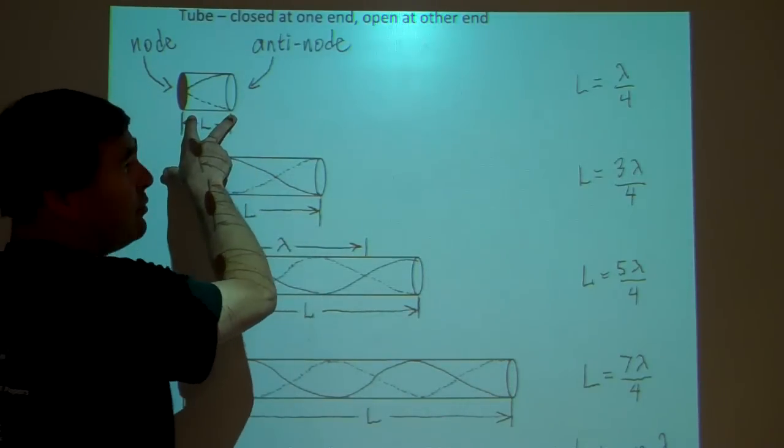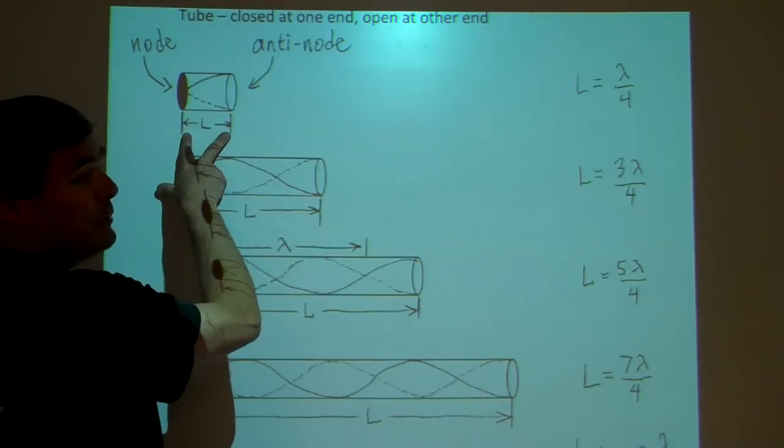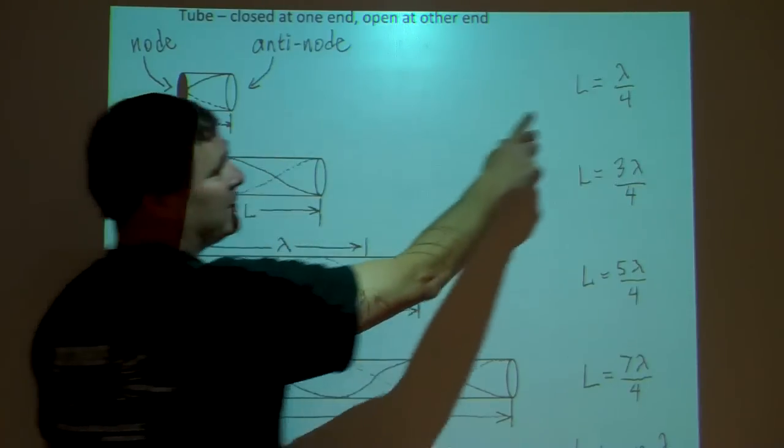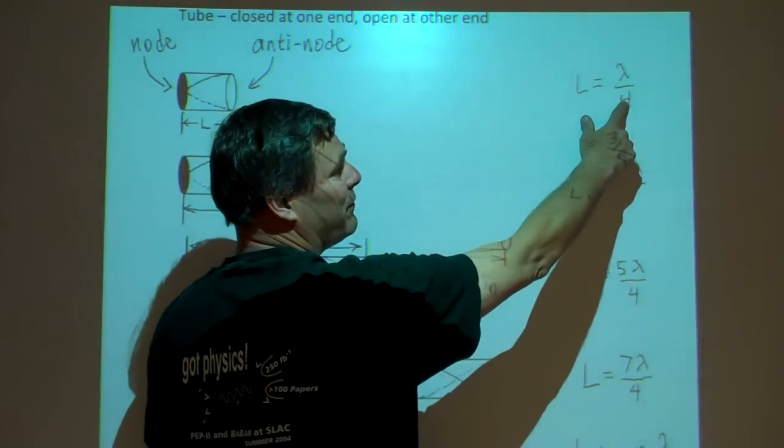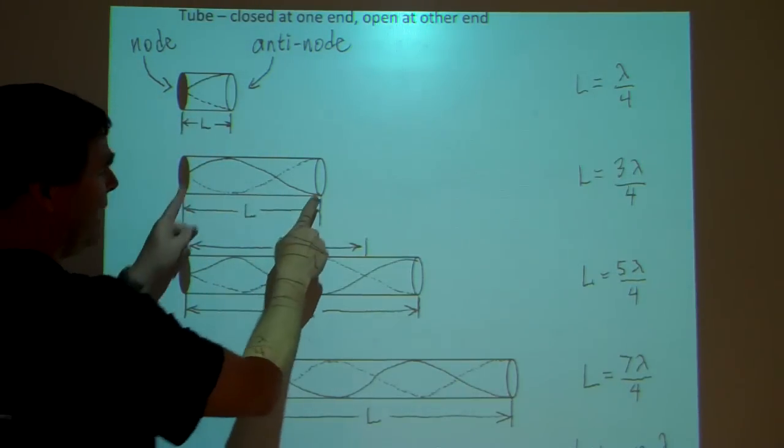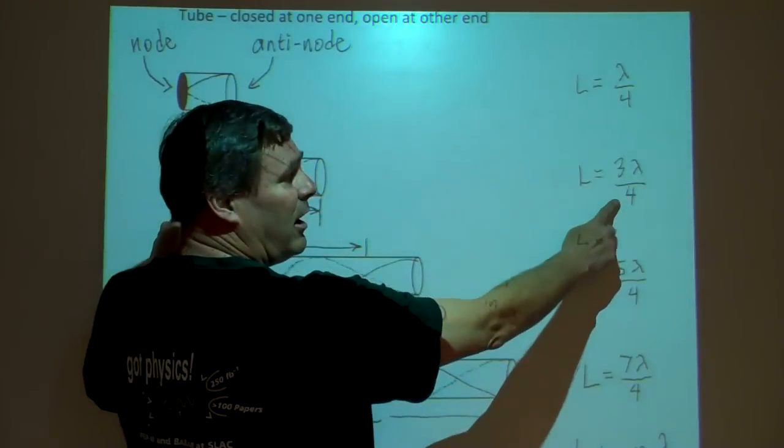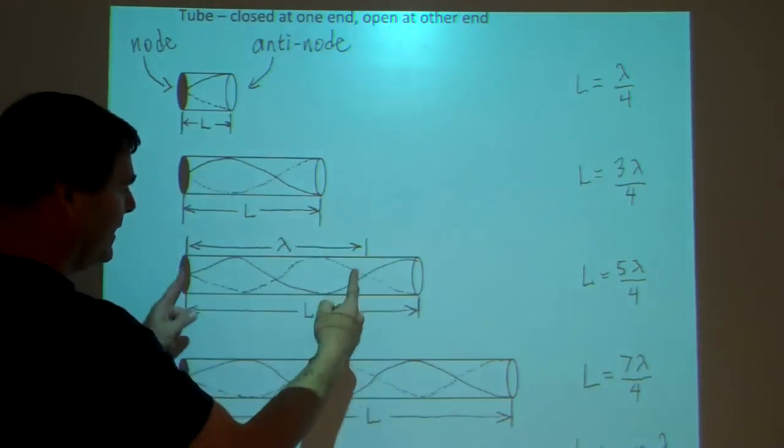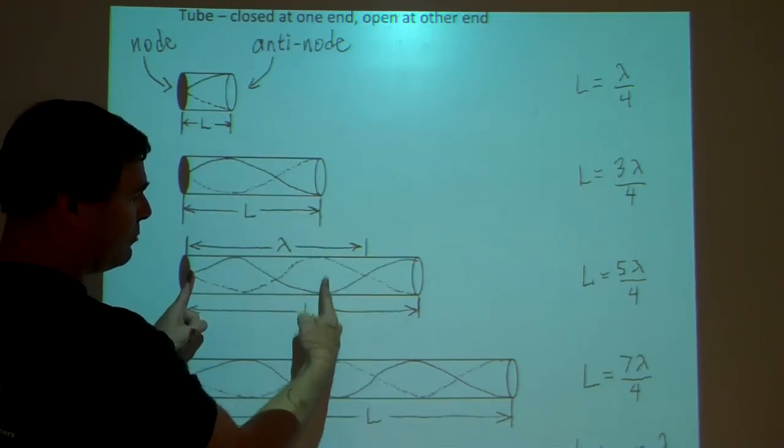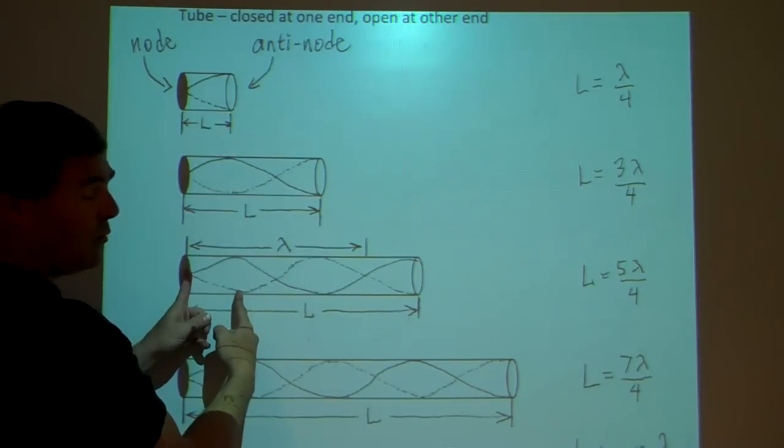But the first standing node occurs at a quarter of a wavelength. So the length of the tube for the first standing wave that I hear is at a length of lambda over four, or one-fourth the wavelength of the sound that I'm hearing. The next standing wave occurs at three-fourths of the wavelength. Here is one full wavelength. You can see for this tube, that's three-fourths of a wavelength. For this tube, that's one-fourth of a wavelength.